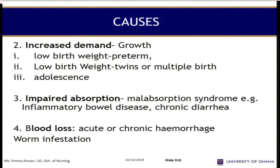When one is growing, the demand for iron is high, which can lead to iron deficiency anemia. Impaired absorption, for example malabsorption syndrome, and blood loss from acute or chronic hemorrhage or worm infestation can all lead to iron deficiency anemia.